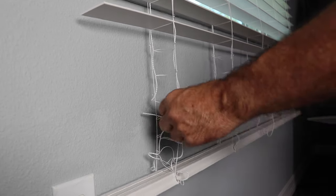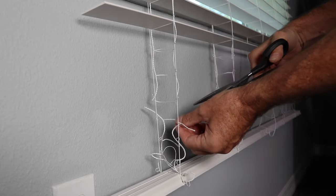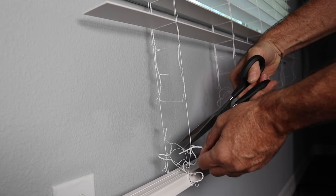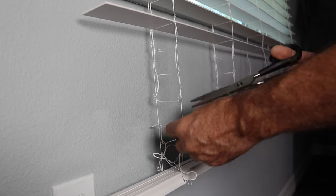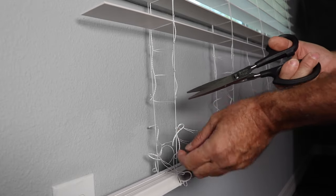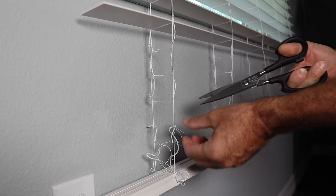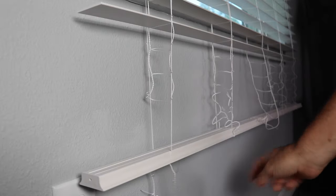All right, so this bottom string can just be removed. Cut these loops out of here and be careful when you do this not to cut your lift cord. So those are freely hanging on the bottom.